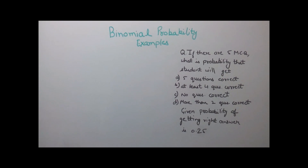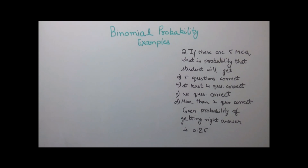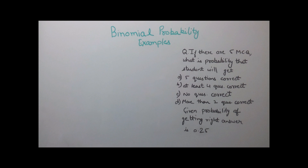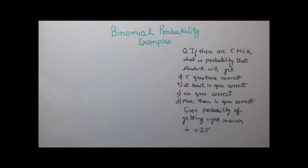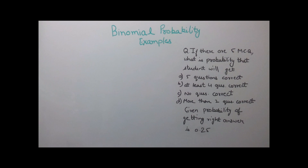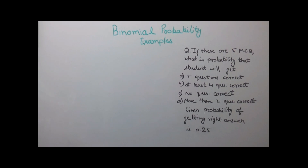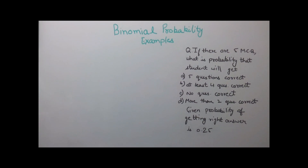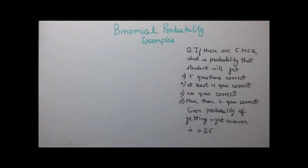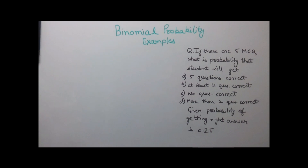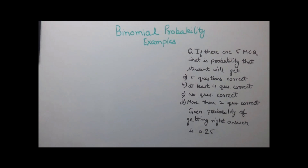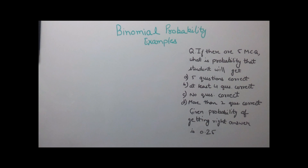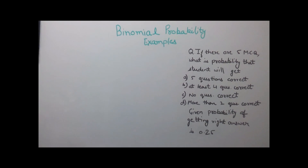The question here says that if there are 5 multiple choice questions, then what is the probability that a student will get 5 questions correct, at least 4 questions correct, no question correct, more than 2 questions correct, given probability of getting the right answer is 0.25.